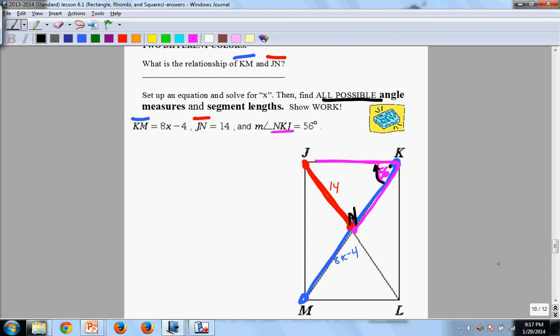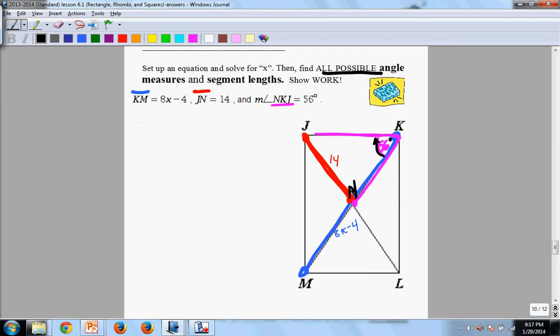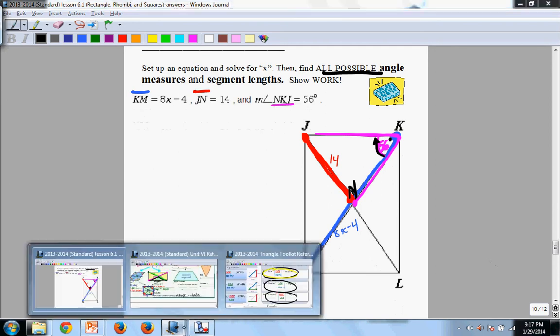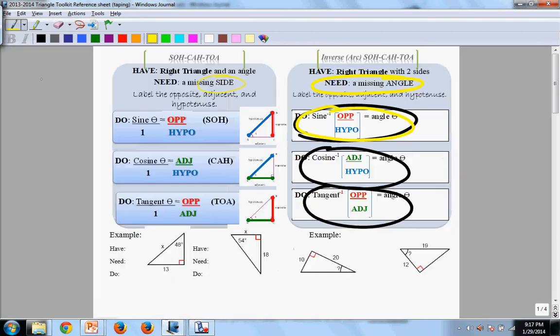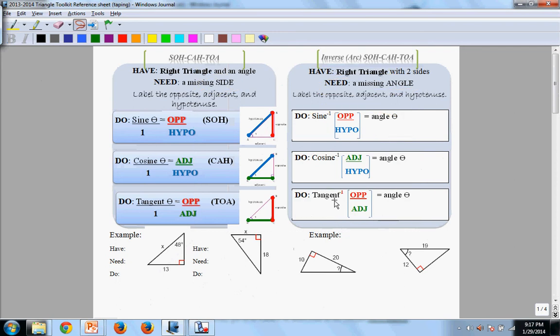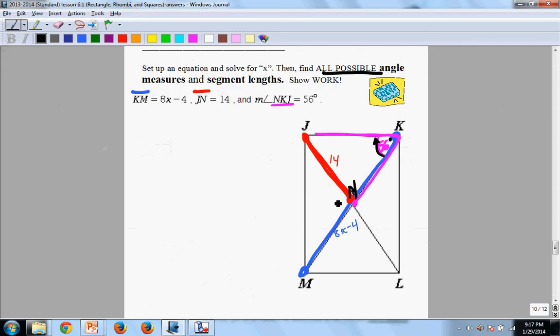Now, using that information, you want to solve for every angle and every side possible. Here's a big hint. At some point in this process, you are going to need to use the My Best Friend to do this properly. Typically, at some point in this process, you're going to have to use something on this page to find either an angle or segment length. But your goal is to find all possible angles and segment lengths.